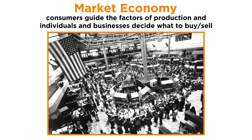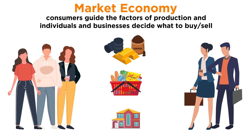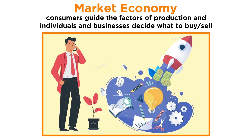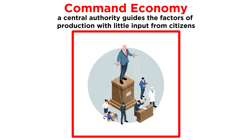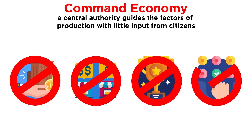The second oldest economic system in history is a market economy. In a market economy, consumers guide the factors of production — it's bottom-up. Individuals and privately owned businesses make their own decisions about what to buy and sell. Market economies are also often called capitalist economies because the capital that entrepreneurs invest in businesses is an important part of the system. Command economies, also known as centrally planned economies, are top-down. A central authority, usually the government, guides the factors of production, and there is usually little input from the people. Command economies operate in direct contrast to market economies by going against private property, free market pricing, competition, and consumer choice.